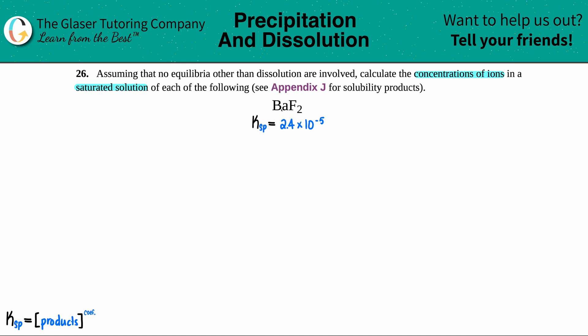So what I did do is I did go to the appendix J to find out the solubility product. Remember the solubility product is just a Ksp. So the Ksp for BaF2 is 2.4 times 10 to the negative fifth.